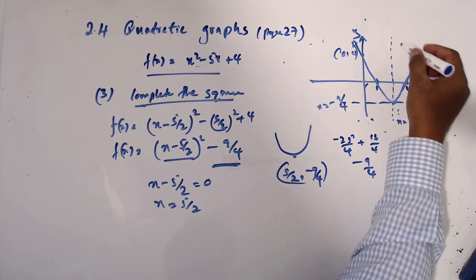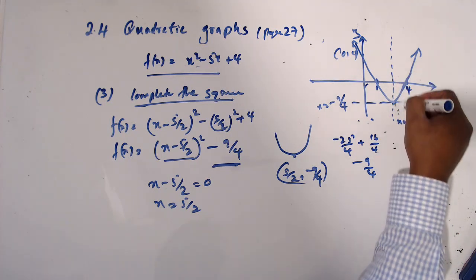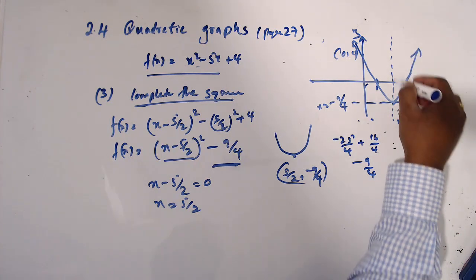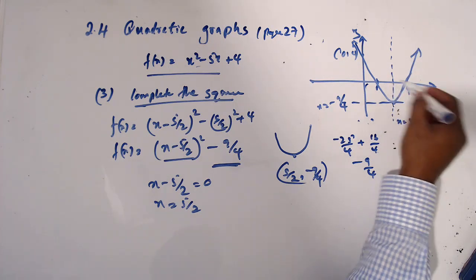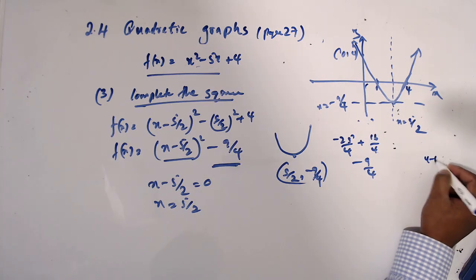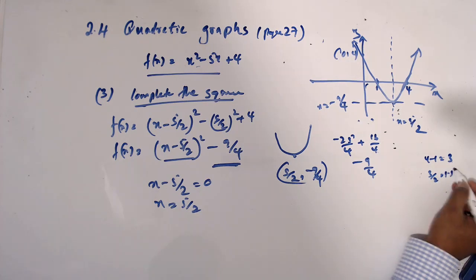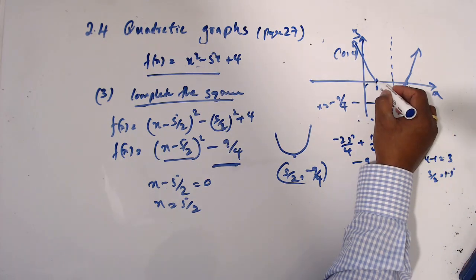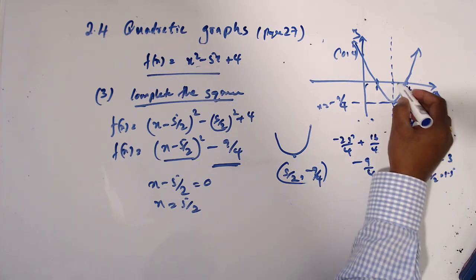Also you can find this symmetric line, or the x coordinate, the equation of this line. Basically, because since it is symmetric, 4 minus 1 is 3, so half of 3 is 1.5. So then you have to add 1 to 1.5, then this point is 2.5, which 5/2 is 2.5. So this is the symmetric line.